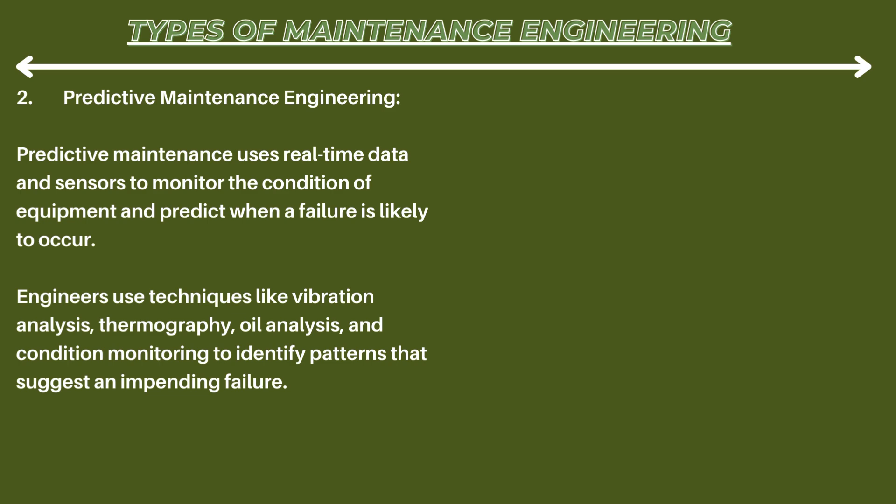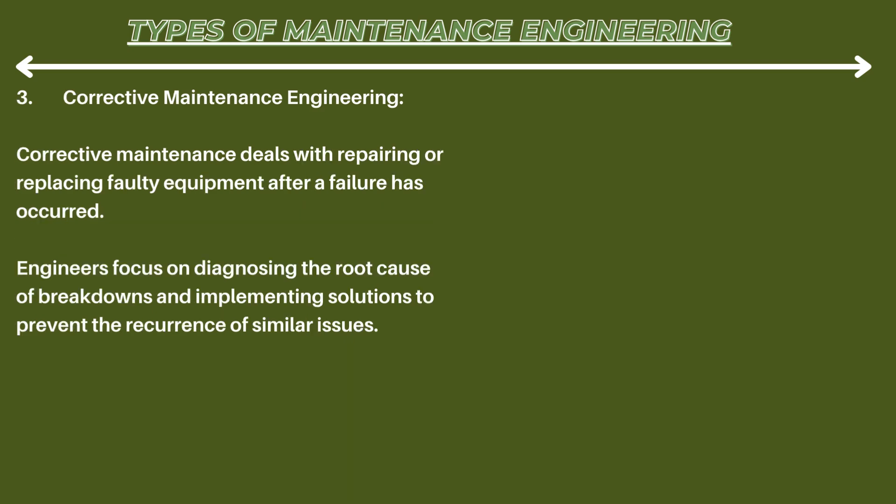Predictive Maintenance Engineering: Predictive maintenance uses real-time data and sensors to monitor the condition of equipment and predict when a failure is likely to occur. Engineers use techniques like vibration analysis, thermography, oil analysis, and condition monitoring to identify patterns that suggest an impending failure.